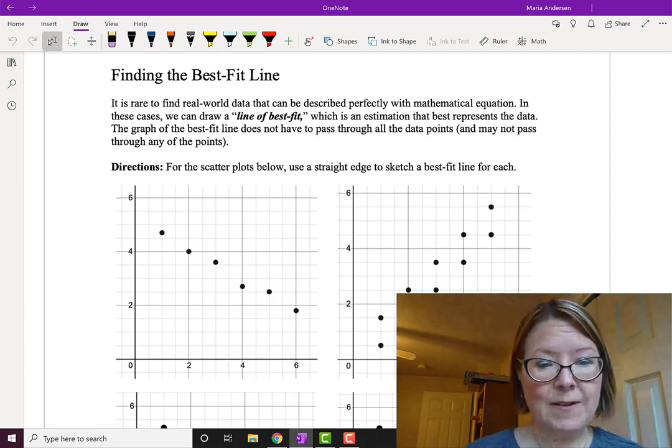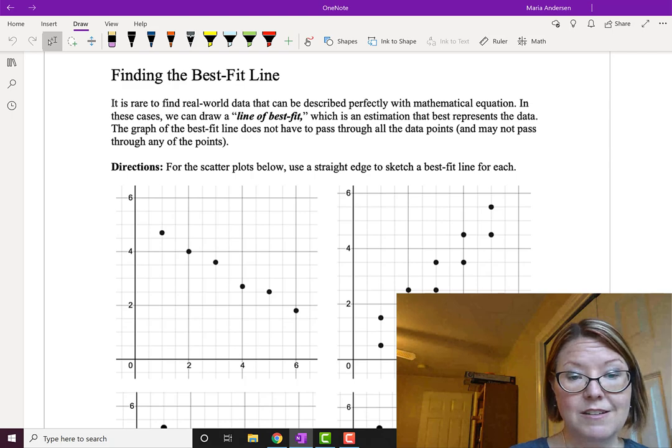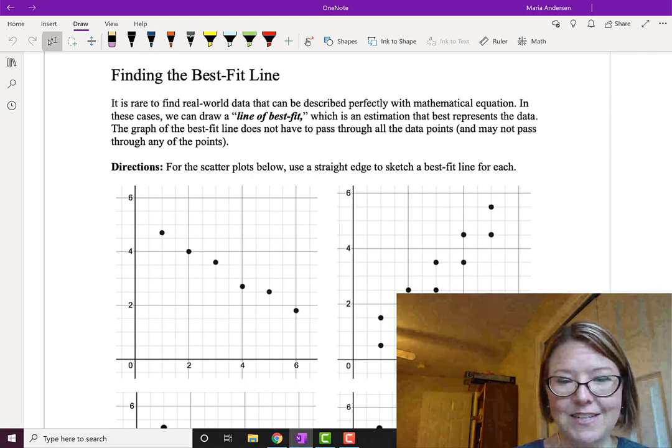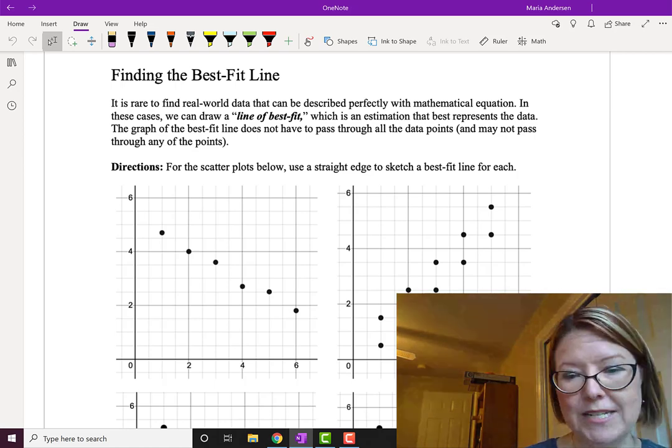In the first scatter plot we have points at 1 comma 4.6, 2 comma 4, 3 comma 3.6, 4 comma 2.4, 4 comma 2.7, 5 comma 2.5, and 6 comma 1.8. In general the pattern is decreasing.